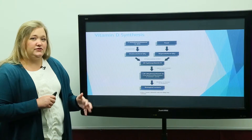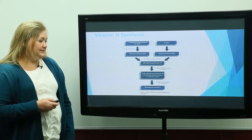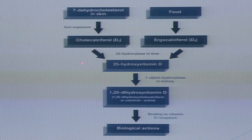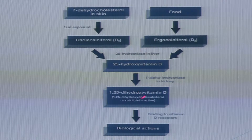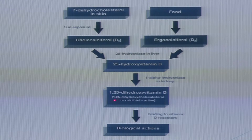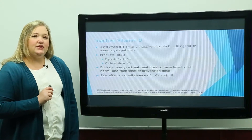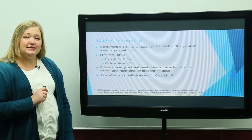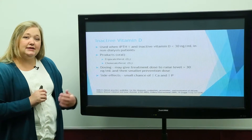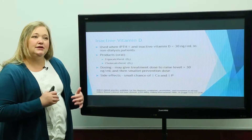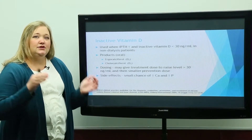Active vitamin D also has some direct effects on phosphorus and iPTH as well. Here are our drug treatment options for inactive products. Once the patient's kidney loses the ability to activate vitamin D, the active vitamin D products need to be the target for drug treatment. But in early stages of chronic kidney disease, the kidney still maintains the ability to convert inactive to active vitamin D.